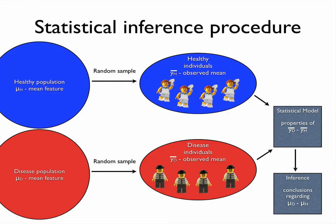Frequently, one ends up in situations where one would like to compare the status of two different populations. This is typically the case in case-and-control studies, or it could be patient groups that have been treated or untreated. It's a great tool to compare two different populations, because we can cancel out measurement errors — or at least measurement biases — due to the fact that we're doing the same kind of measurements on both the healthy and the diseased populations. Here I've demonstrated this scenario with a somewhat arbitrary example, where we have defined a healthy population as well as a diseased population. Each of those populations has a certain feature we're interested in studying, which we call the mean of that feature, mu.